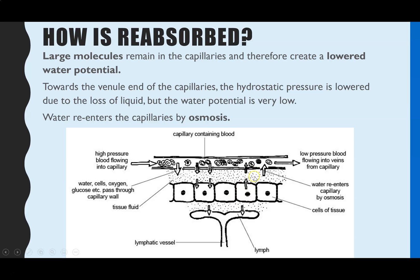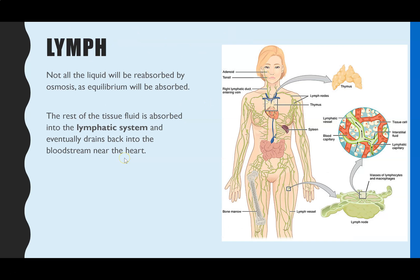Within that water there will be dissolved waste molecules that the cells are releasing. As cells respire they release carbon dioxide and produce urea. Molecules such as carbon dioxide and urea dissolve in the water, and are then reabsorbed with the water by osmosis back into the blood — that's how waste from cells enters the blood to be removed from the body. However, not all tissue fluid is reabsorbed by osmosis, because eventually an equilibrium will be reached. Osmosis moves water from a higher to a more negative water potential, so with all that water moving back in, equilibrium is reached.